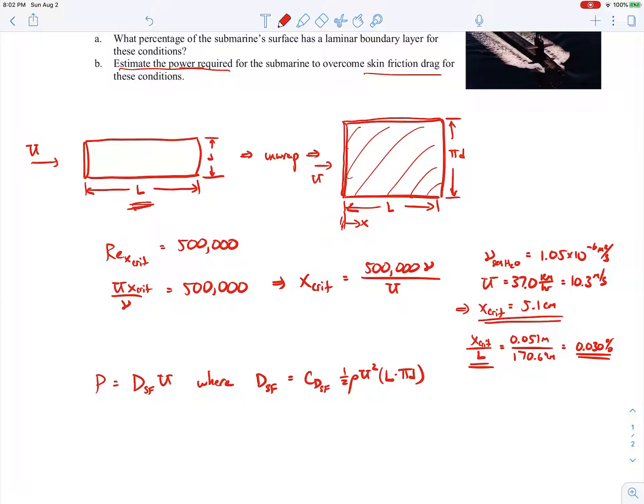Now the skin friction drag coefficient comes from our turbulent boundary layer correlations, and so we covered that in one of the lectures. So that comes out to be 0.0742 all over the Reynolds number based on the length raised to the one-fifth power, where the Reynolds number based on the length is the free stream velocity times L divided by the kinematic viscosity.